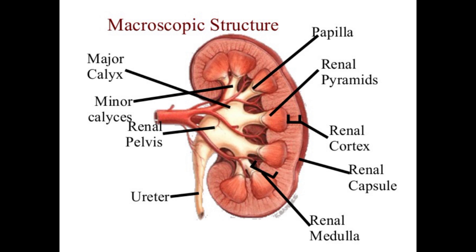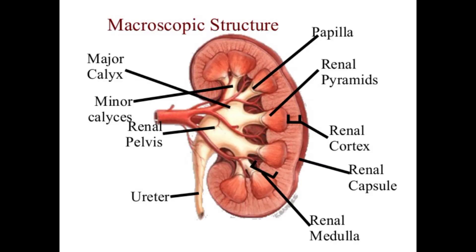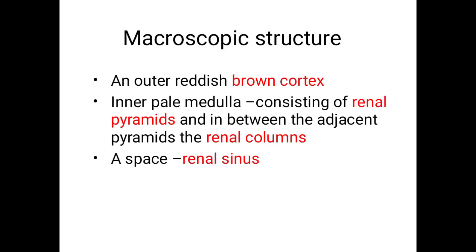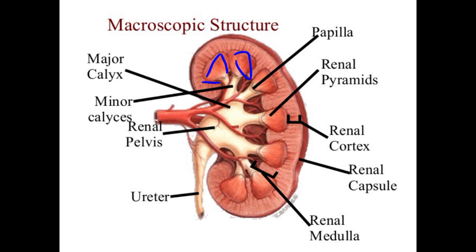Looking at the macroscopic structure of the kidney in coronal section: it consists of two parts — the outer reddish-brown region called the cortex, and the inner pale region called the medulla. The medulla consists of conical masses that are pyramidal in shape, called renal pyramids.